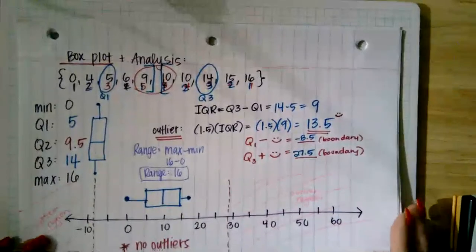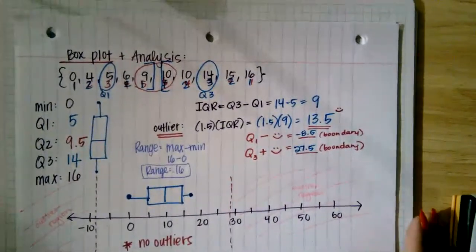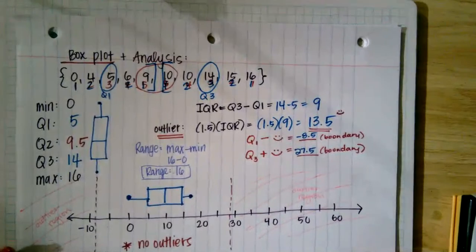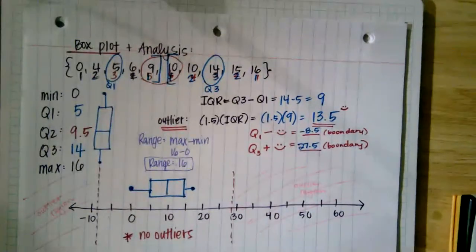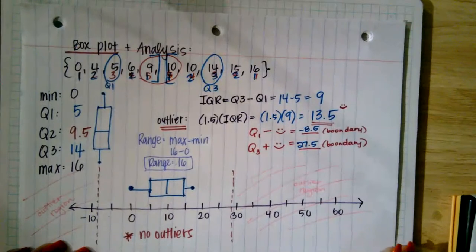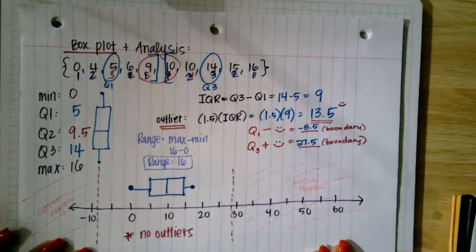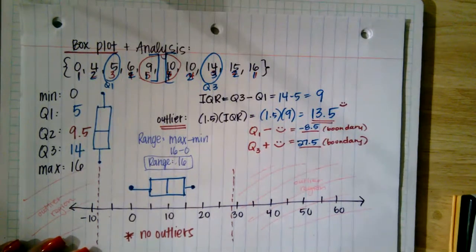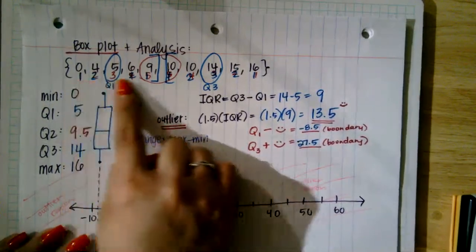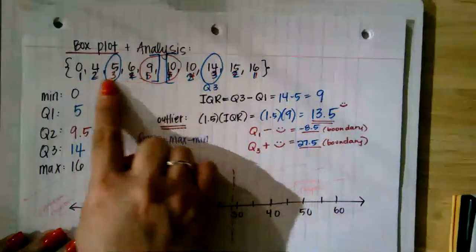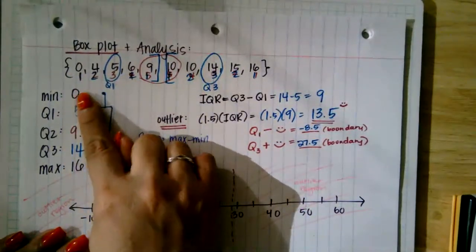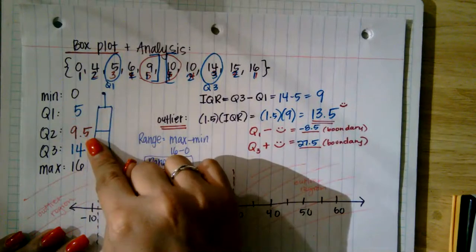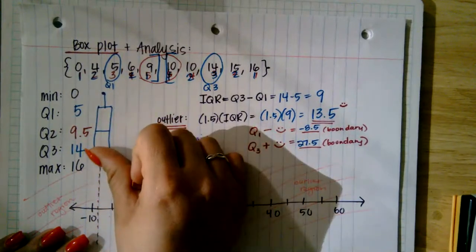Now I'm going into a box plot analysis. Standard deviation analyzed the mean and distance from the mean; box plots analyze the range and differences in quartiles, cutting the data set into quarters and halves. Here's my ordered data set. I need to find the minimum, first quartile, second quartile, third quartile, and maximum.